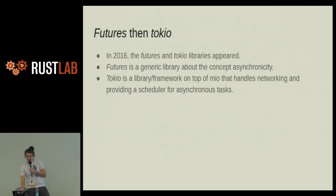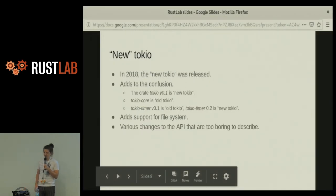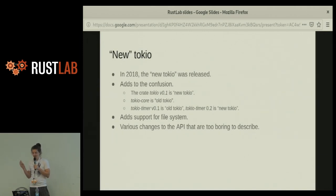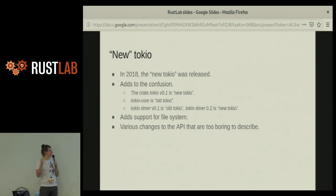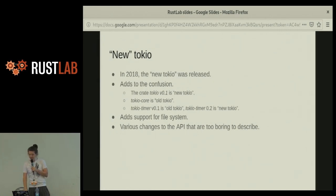Then 2018, you have New Tokyo, which adds to the confusion. The crate Tokyo itself is New Tokyo, but Tokyo Core is Old Tokyo. For example, Tokyo Timer 0.1 is Old Tokyo and 0.2 is New Tokyo. Kind of hard to understand all this, but here we are. The New Tokyo added support for the file system and made some API changes.